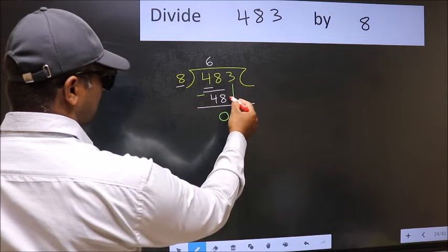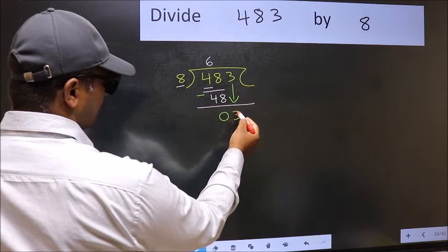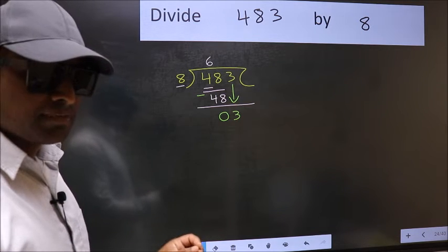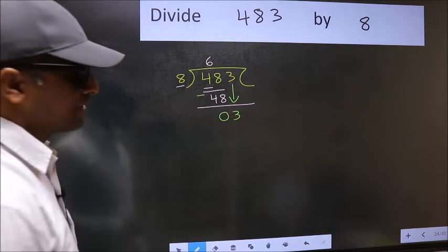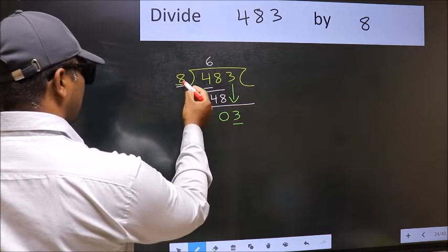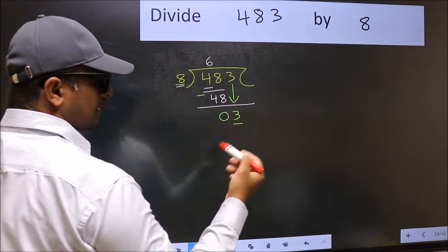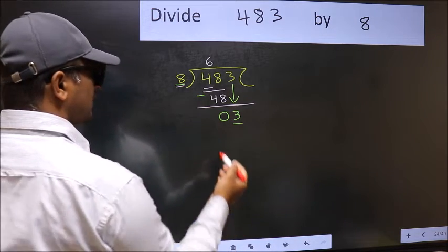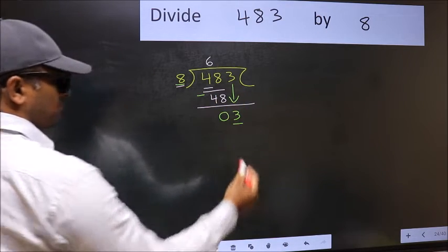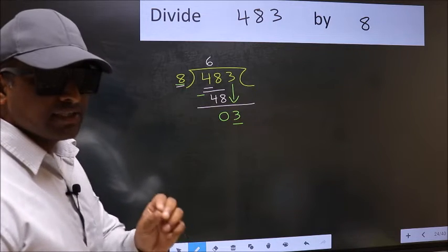After this, bring down the beside number. So 3 down. After this step, the mistake happens. And the mistake is this. Here we have 3 and here 8. 3 is smaller than 8. So what many do is they directly put dot and take 0, which is wrong. Why is it wrong?